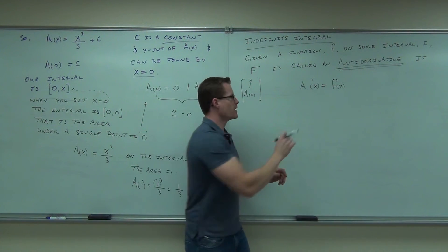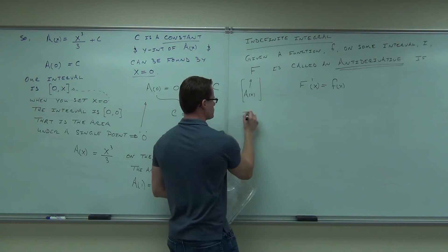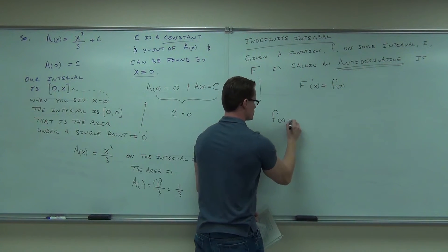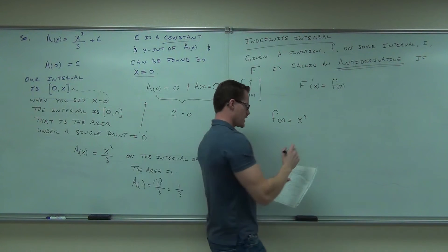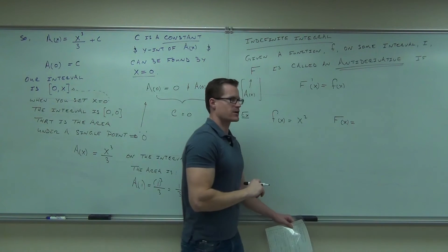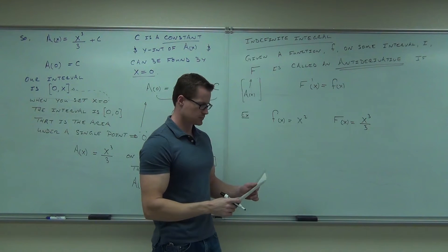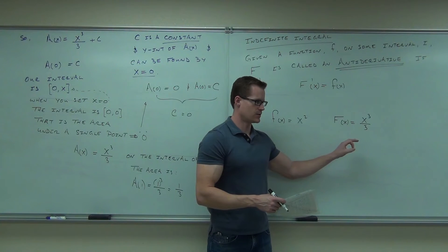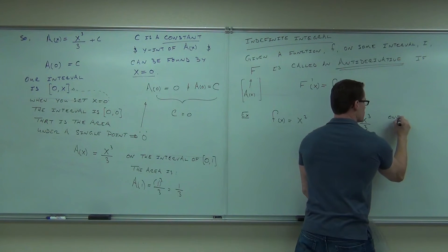F is the anti-derivative — same stuff. Let me give you the example that we just talked about. Capital F of X is the same thing as A of X, the area. Here's what we'd say: f of X has an anti-derivative of capital F of X, and capital F of X should be one-third X cubed, or X cubed over three. Is this the anti-derivative or an anti-derivative? It's one of many. This is an anti-derivative — one anti-derivative.